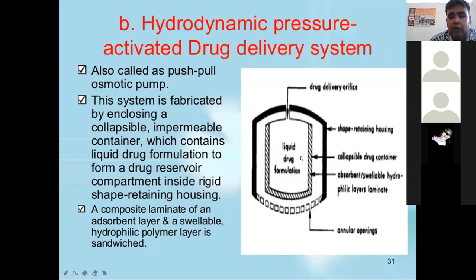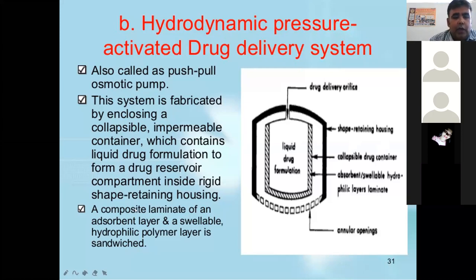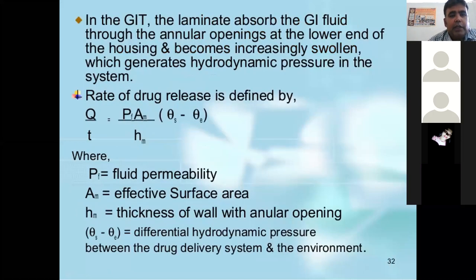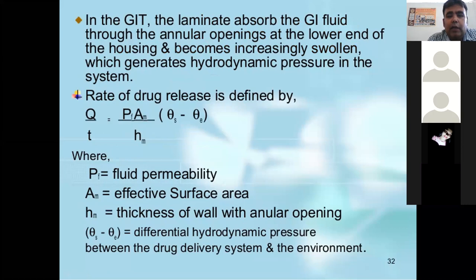When pressure is applied, the drug will be delivered. The absorbent is a swellable hydrophilic layer; it is a shape-retaining housing with annular openings. A composite laminate of an absorbent layer and a swellable hydrophilic polymer layer is sandwiched. When in the GIT, the laminate absorbs GI fluid through the annular openings and becomes increasingly swollen, which generates hydrodynamic pressure in the system.